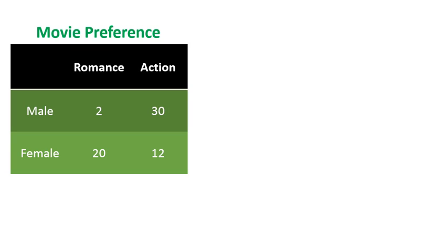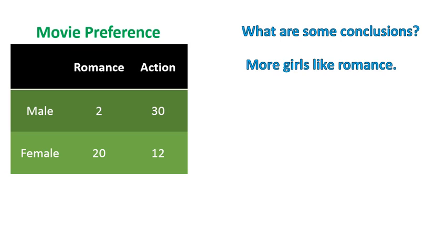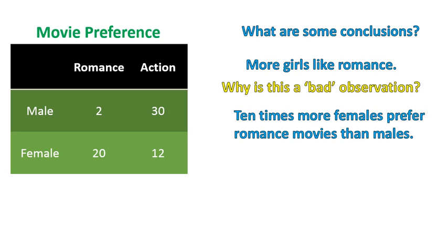This table has a movie preference for males and females — romance versus action — and you can see the numbers in there. What are some conclusions we can come to based on this table? One conclusion you could say is more girls like romance. The problem is that's kind of a bad observation, stated in a poor way. What's a better way to state what is happening with the preference for romance? We could say ten times more females prefer romance movies than males. That would be a better way to state this.